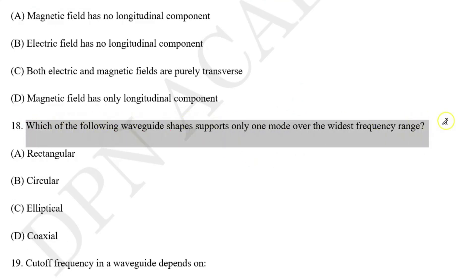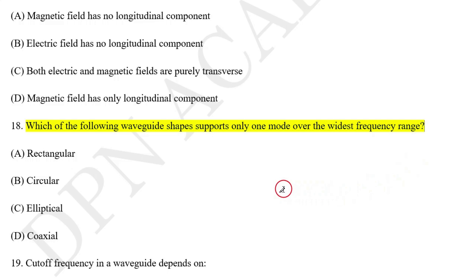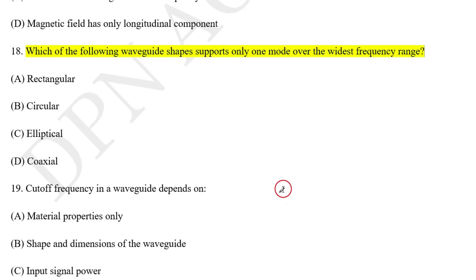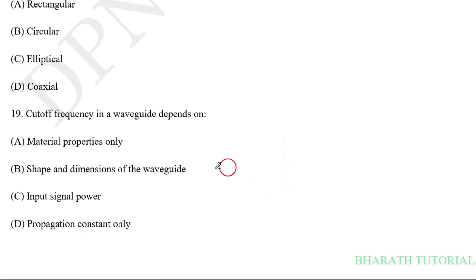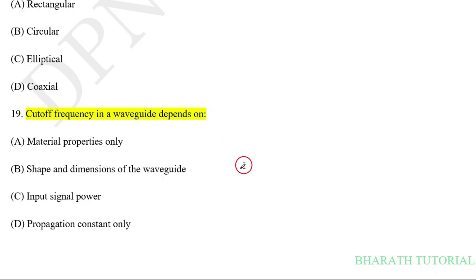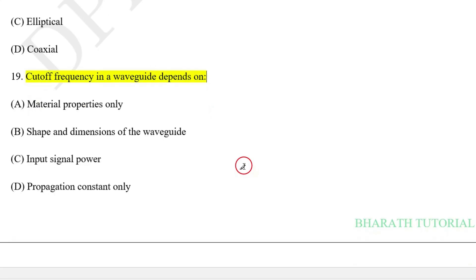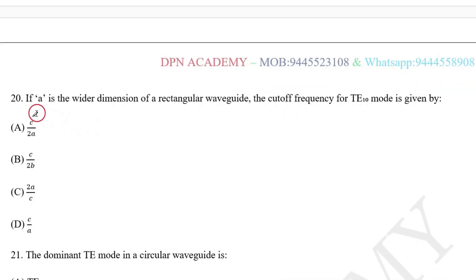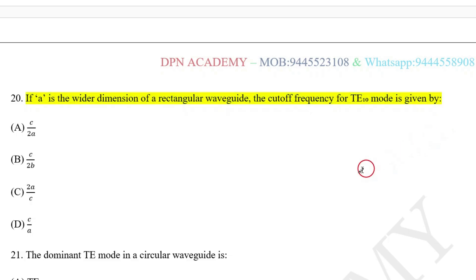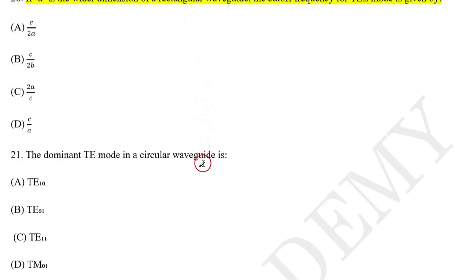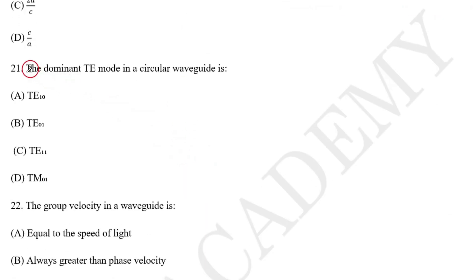Question number 17: Which of the following is true for TM mode in a waveguide? Question number 18: Which of the following shapes supports only one mode over the widest frequency range? From the diagram we can easily choose the correct option. Question number 19: The cutoff frequency in a waveguide depends on? Question number 20: If A is the wider dimension of a rectangular waveguide, the cutoff frequency of TE10 mode is given by? Question number 21: The dominant TE mode in a circular waveguide is?